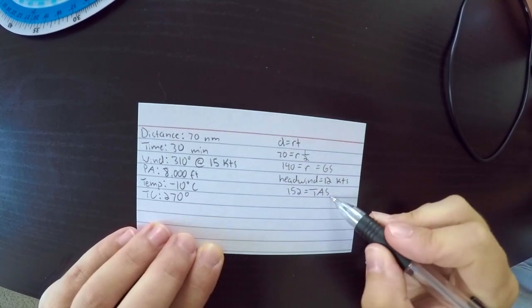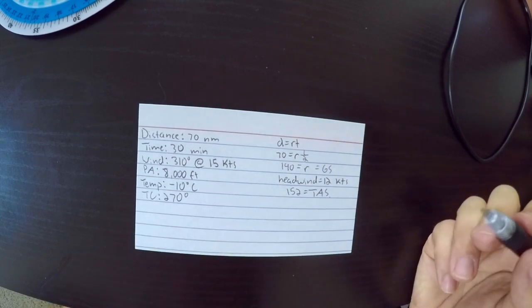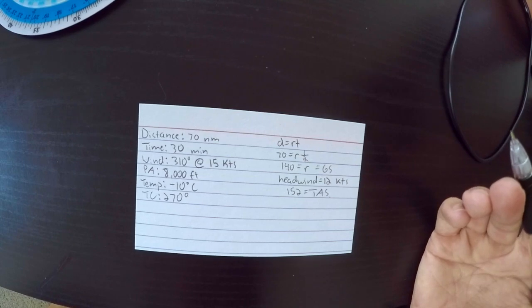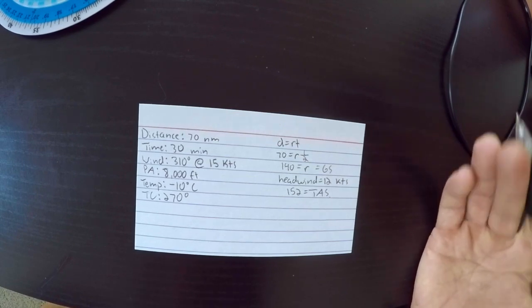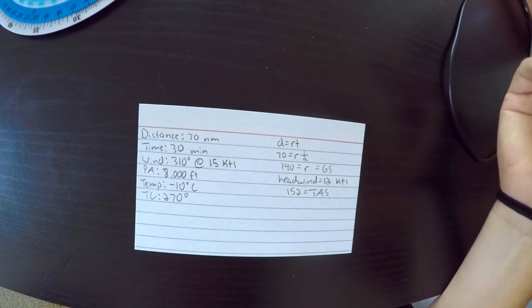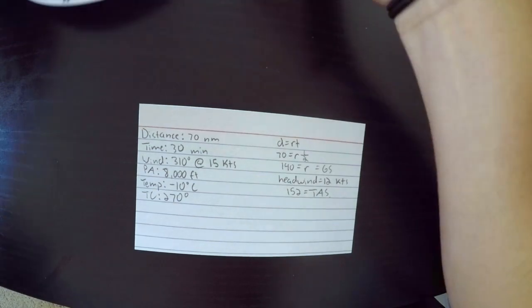Now that we have true airspeed, we can find our indicated airspeed, which is the same thing as calibrated airspeed. That's basically just the airspeed that your airspeed indicator shows. And again, this is affected by things like pressure altitude and wind.